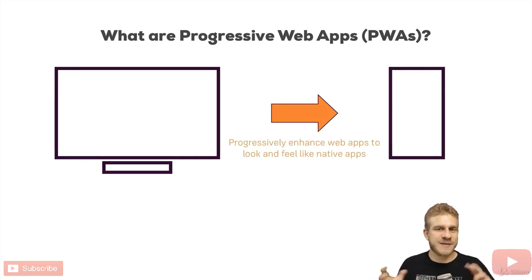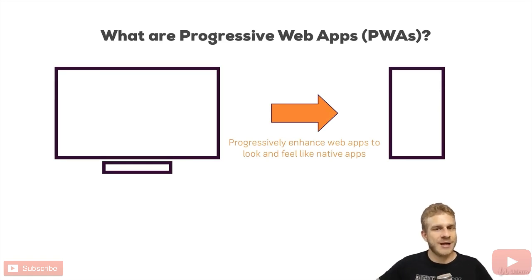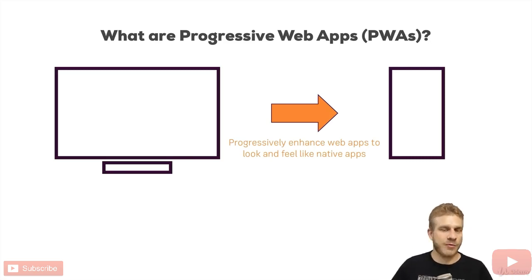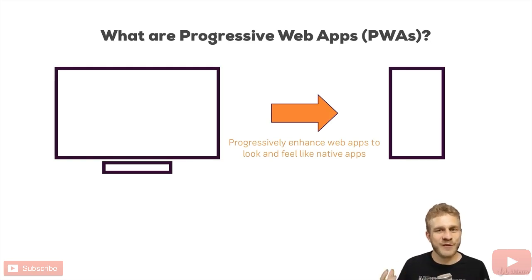This is not just about responsive design so that it looks good on both devices — we've been doing that for a couple of years already. It's about other things you know from native mobile apps, like your app working if you're offline, having an icon on the home screen, accessing the device camera or the location, and synchronizing data in the background. These are all features which were hard to do in web applications in the past, but nowadays we have browser support in a lot of browsers and can therefore use them.